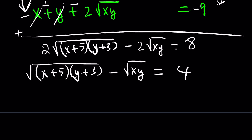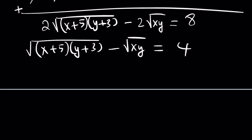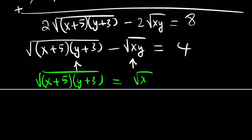We still have two variables and a single equation. Instead of squaring both sides immediately, I want these two radical terms on opposite sides. So let's add the square root of xy to both sides, putting it on the right-hand side along with the 4, and then we'll square both sides.